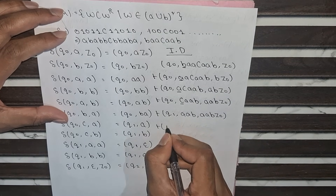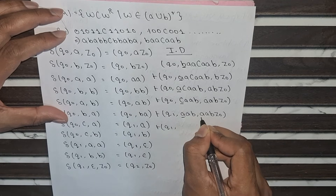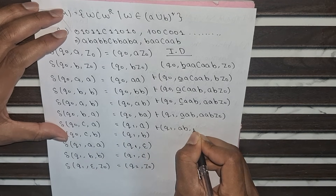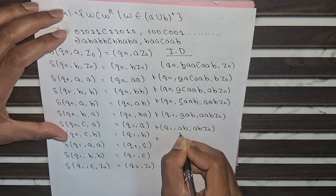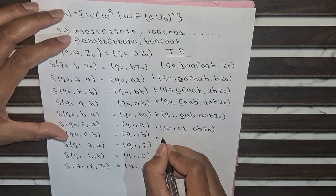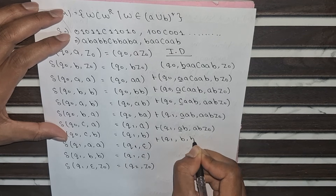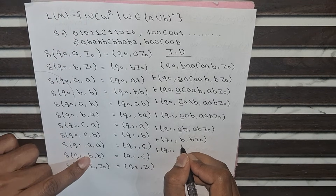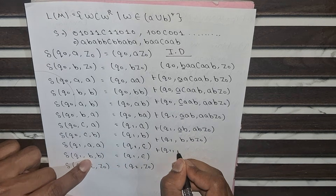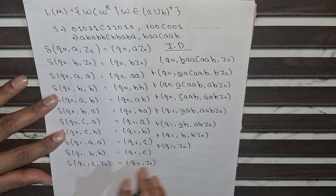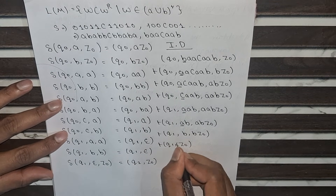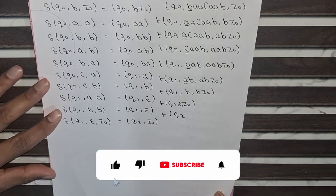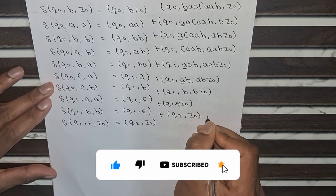Now in state Q1, the input symbol is A and the top of the stack is A, so we pop A. The configuration becomes (Q1, AB, ABZ0). The input symbol is A again and the top of stack is A — we pop A again, leaving (Q1, B, BZ0). Next, input B and top of stack B, so we pop B, leaving (Q1, ε, Z0). Finally, with epsilon input and top of stack Z0, we transition from Q1 to Q2 — the stack is empty and the string is accepted.